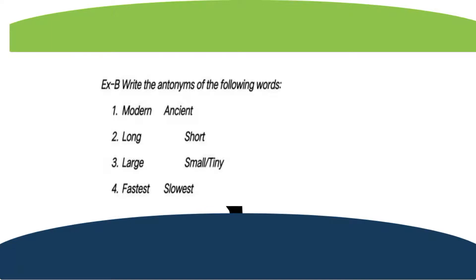Exercise B of this paragraph: write the antonyms of the following words. Antonym means opposite — the opposite of the given word. Modern: the antonym is ancient. Long: short. Large: small or tiny — both are correct. Fastest: slowest. These are the antonyms. Write down the answers in your notebook.